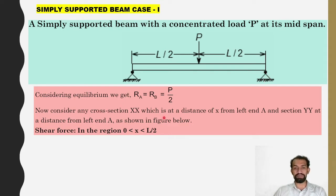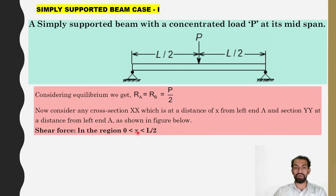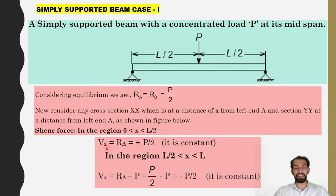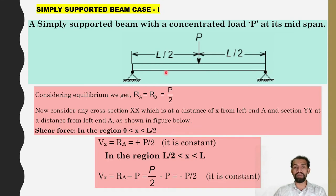Considering any cross section XX at a distance from left end A, and section YY at a distance from left end A as shown in the figure. Shear force in the region 0 to L by 2: x is varying between 0 to L by 2. Vx equals Ra, which is positive and constant, equal to P by 2 in the region 0 to L by 2. From the center point towards the right, L by 2 to L.